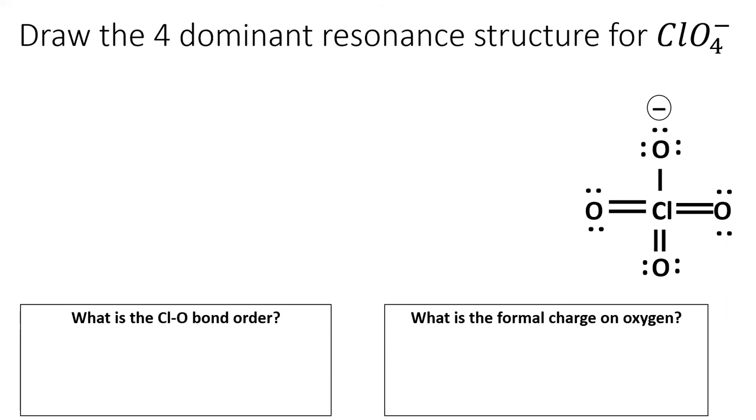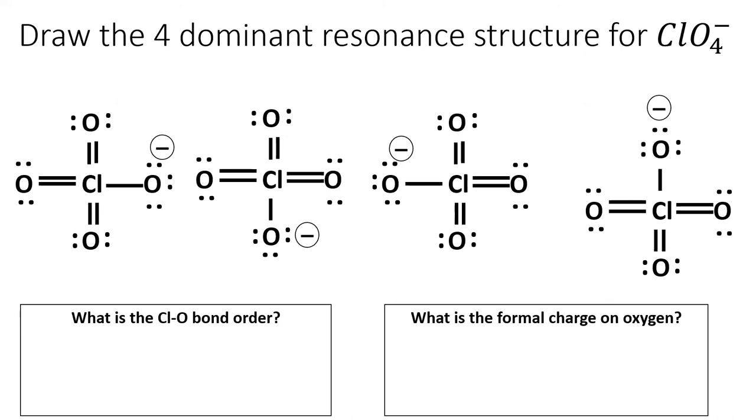Perchlorate is a symmetric molecule, so I can construct each of the additional three resonance structures by rotating which chlorine-oxygen bond is a single bond. Notice that I also have to change which oxygen has the negative charge when I do this. Now, these four resonance structures are all equivalent, so they each contribute equally to the actual perchlorate ion.